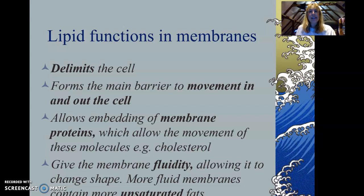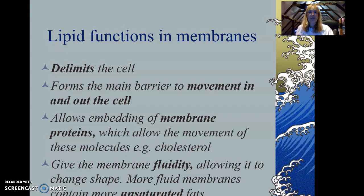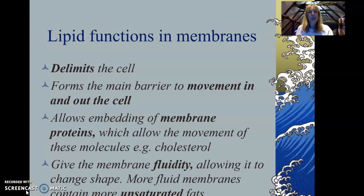The membrane also allows the embedding of membrane proteins. You'll remember from the fluid mosaic model of a membrane that there are proteins embedded in it, and that allows the movement of molecules such as cholesterol. Finally, the lipid bilayer gives the membrane fluidity, allowing it to change shape — which is really useful. More fluid membranes also tend to contain more unsaturated fat, so it's good to make that link.